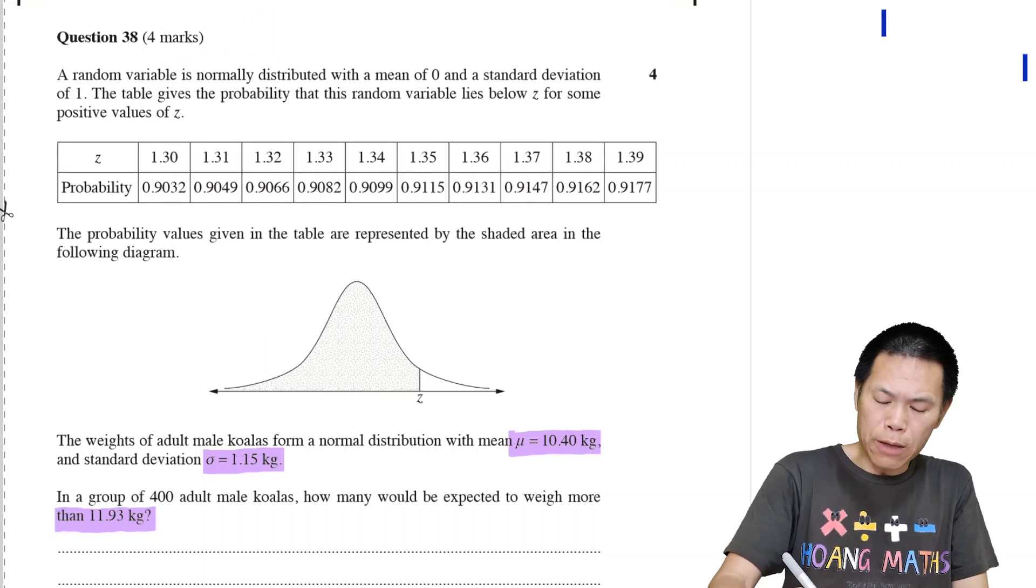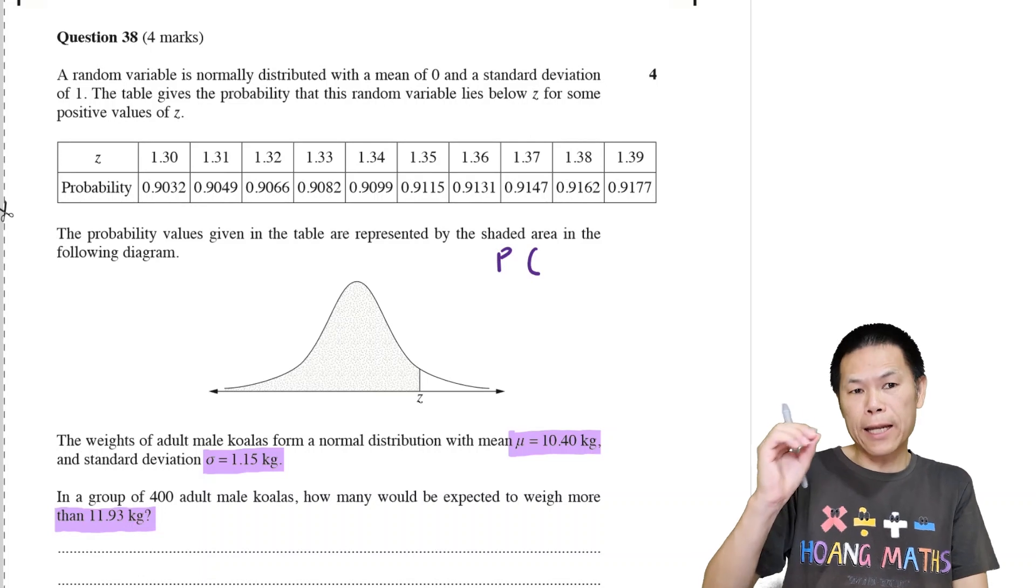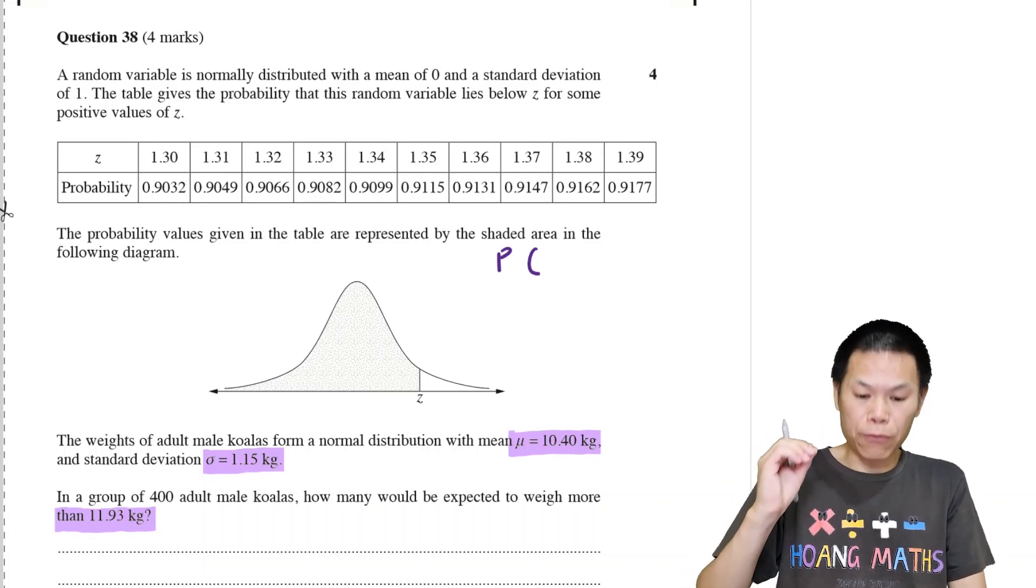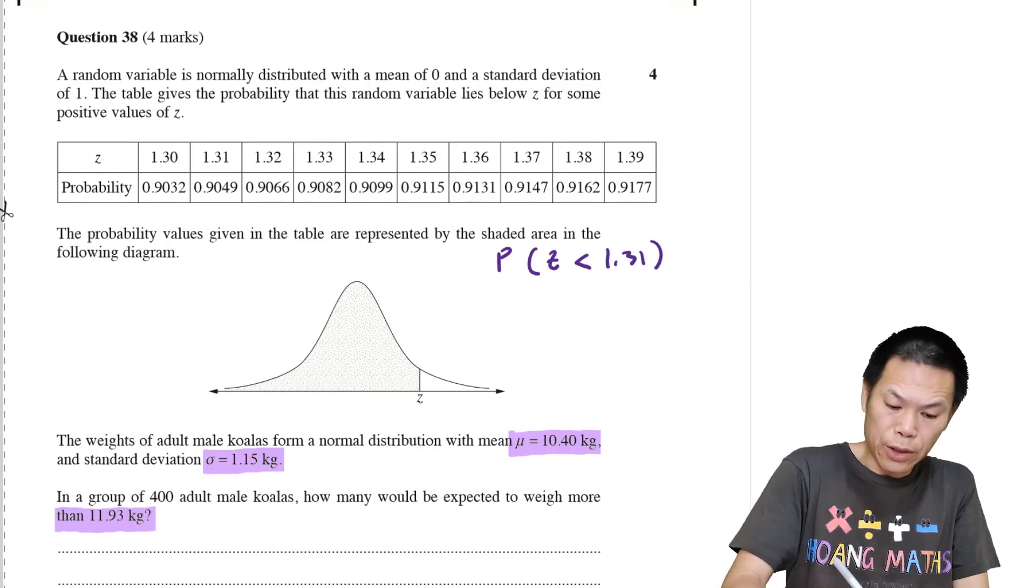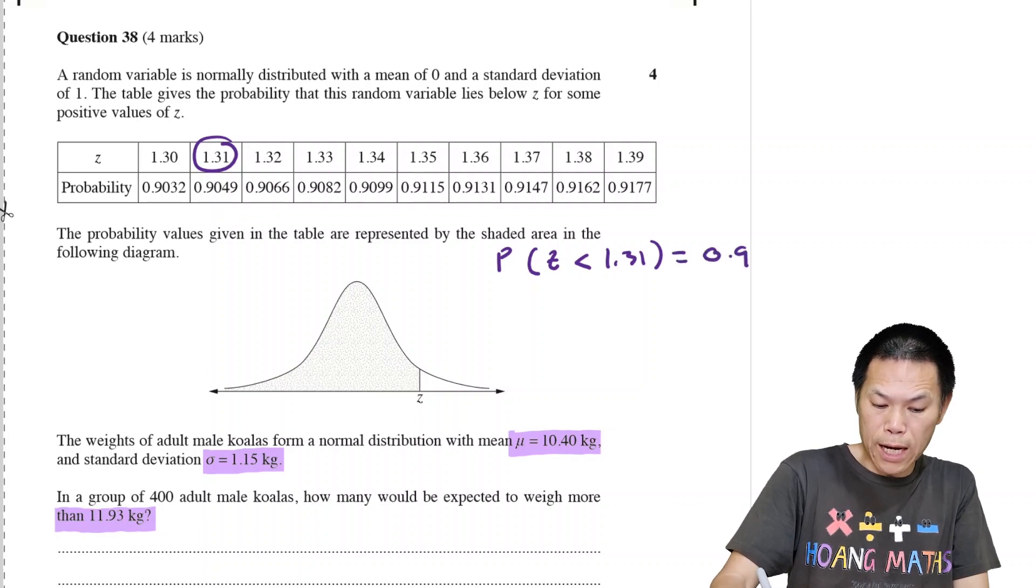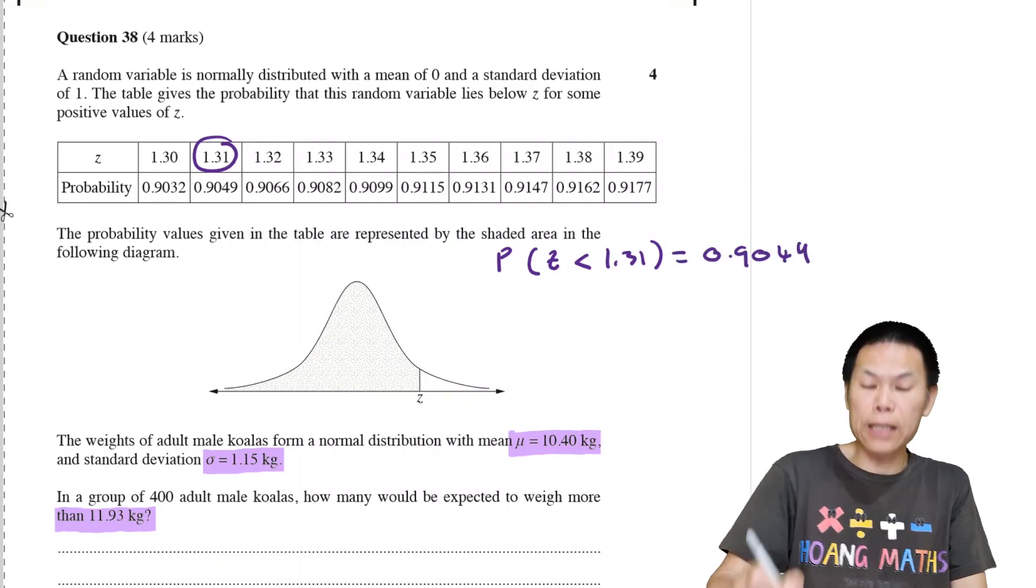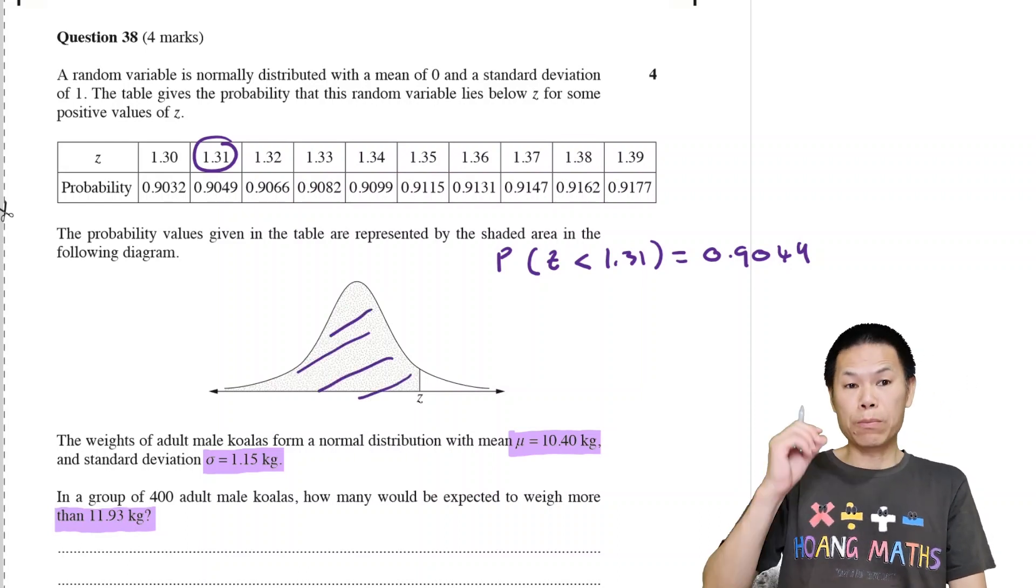The table given here is the probability of Z less than a number. For example, probability of Z less than 1.31 equals 0.049. That's what that means, because Z is less than. Keep that in mind.